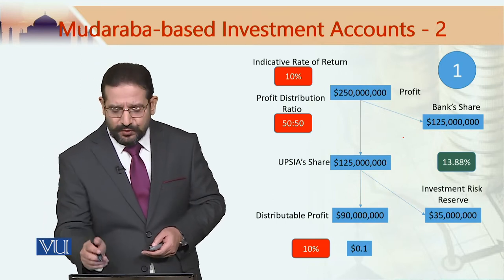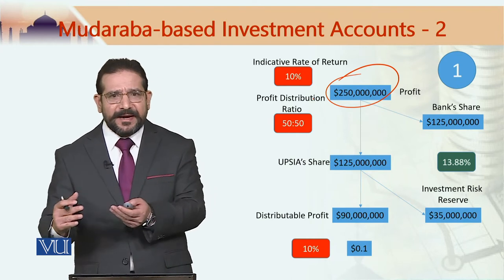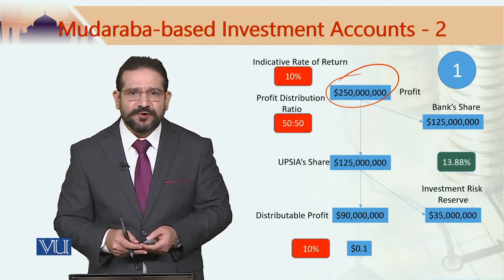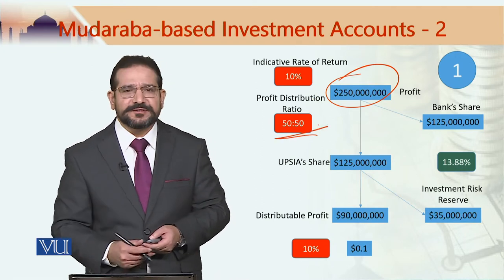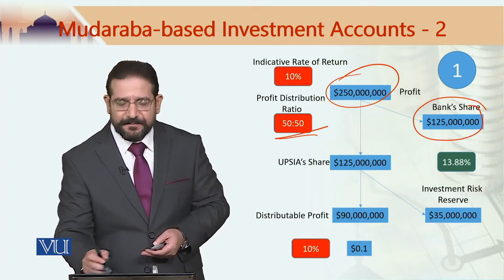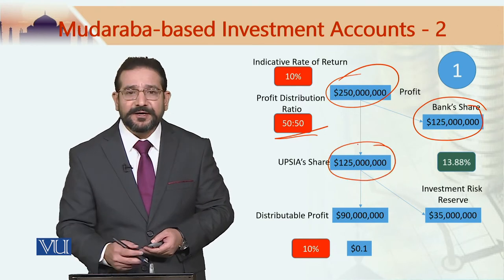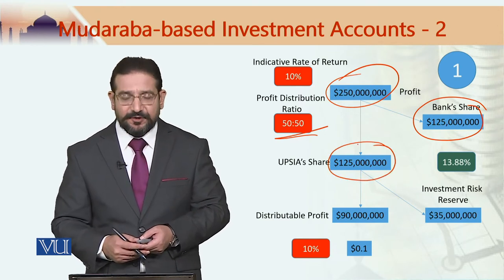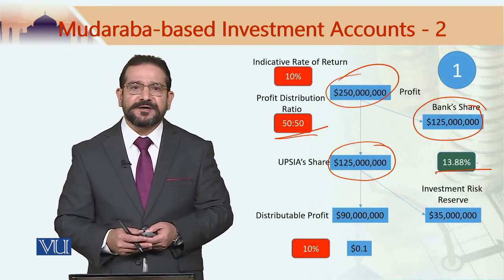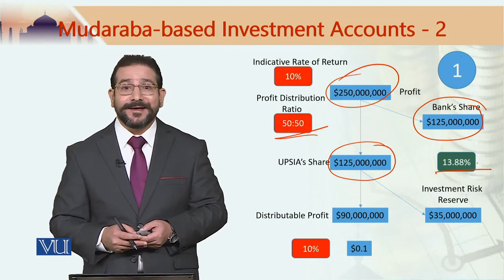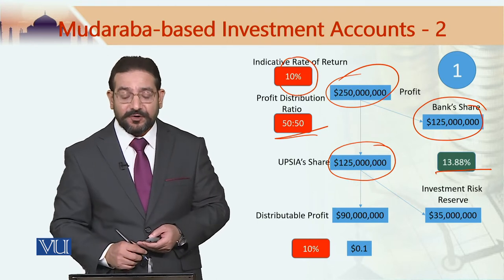This 250 million would be distributed between the bank and the unrestricted profit sharing investment account holders. With a 50-50 profit distribution ratio, 125 million would be the bank's share and 125 million would be the share of the unrestricted PSIA holders, which generates a rate of return of 13.88 percent — a lot more than the indicative rate of return of 10 percent.